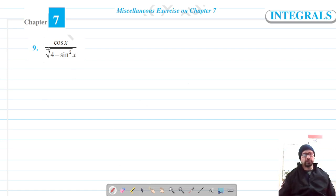Welcome to Present Science Academy classes and we are on to question number 9 of miscellaneous exercise on chapter 7. Let's consider our integral as I, so I equals cos x upon the square root of 4 minus sine squared x dx.